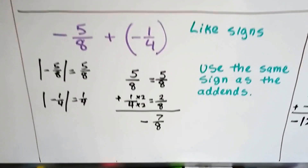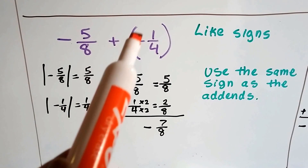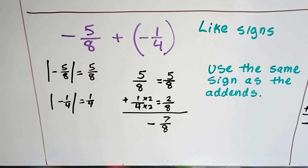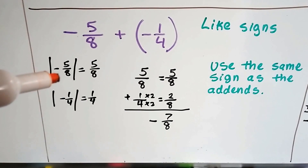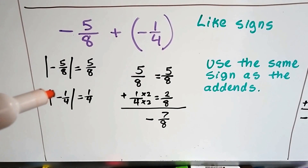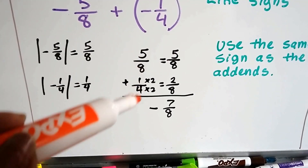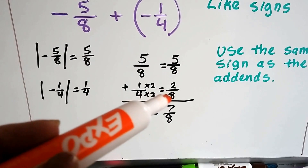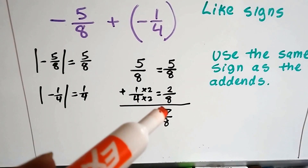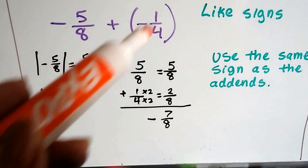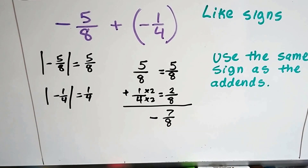Let's try one with fractions: negative 5/8 plus negative 1/4. They have like signs, so the answer is going to be negative — like signs, like the addends. The absolute value of negative 5/8 is 5/8, and the absolute value of 1/4 is 1/4. We need common denominators: 4 goes to 8, so the numerator goes to 2, giving us 2/8. Now we have 5/8 plus 2/8, which is 7/8. Because both addends had like signs — negative — the answer is negative 7/8.